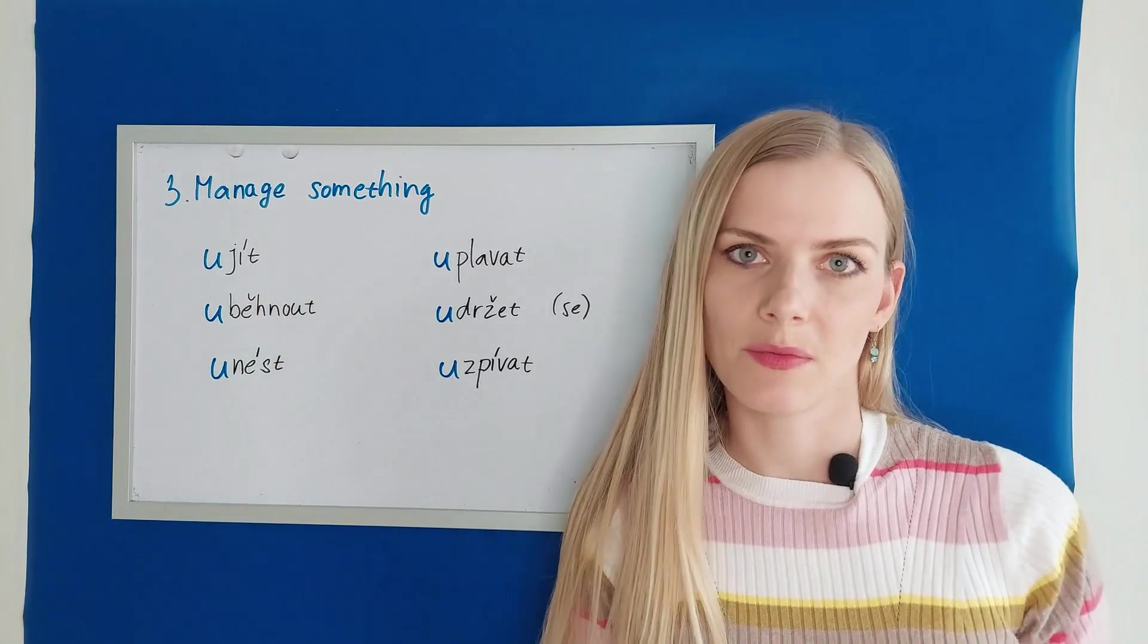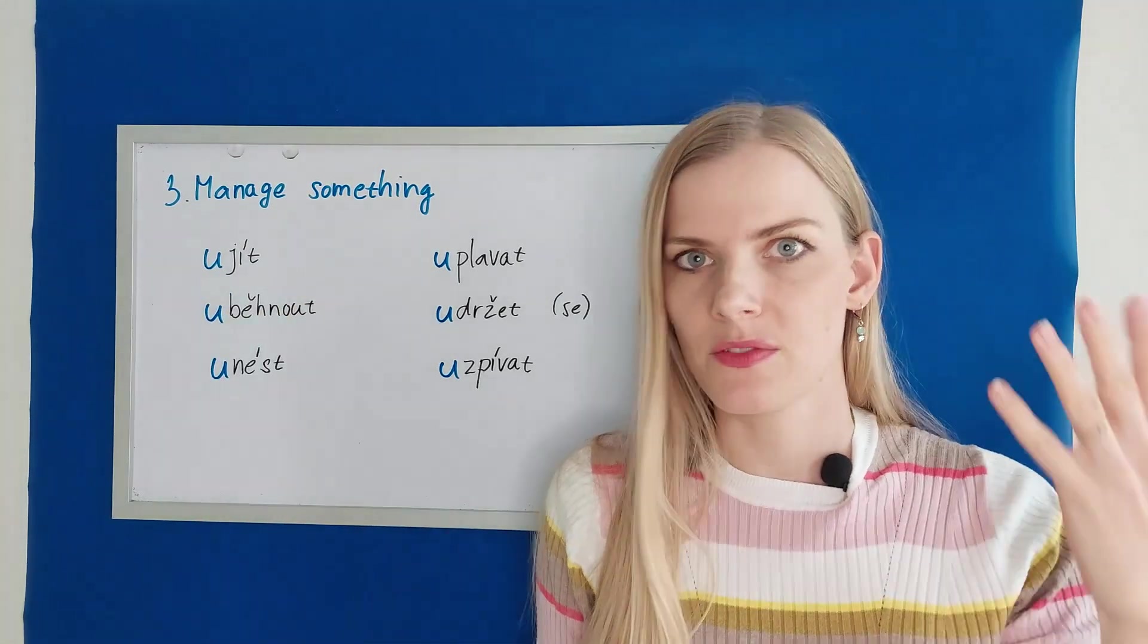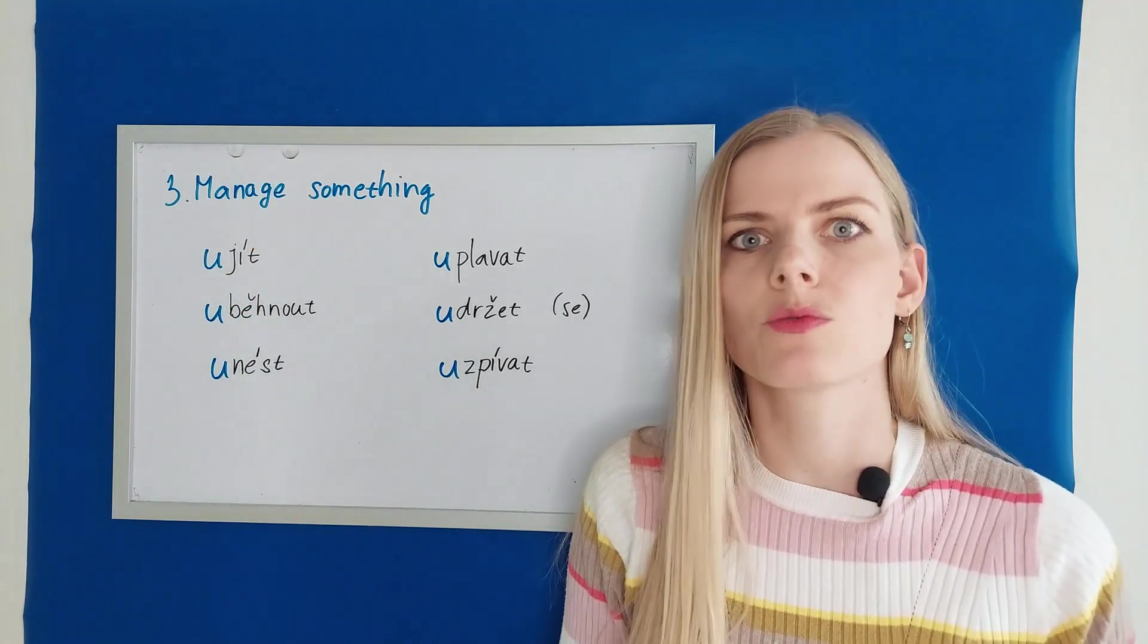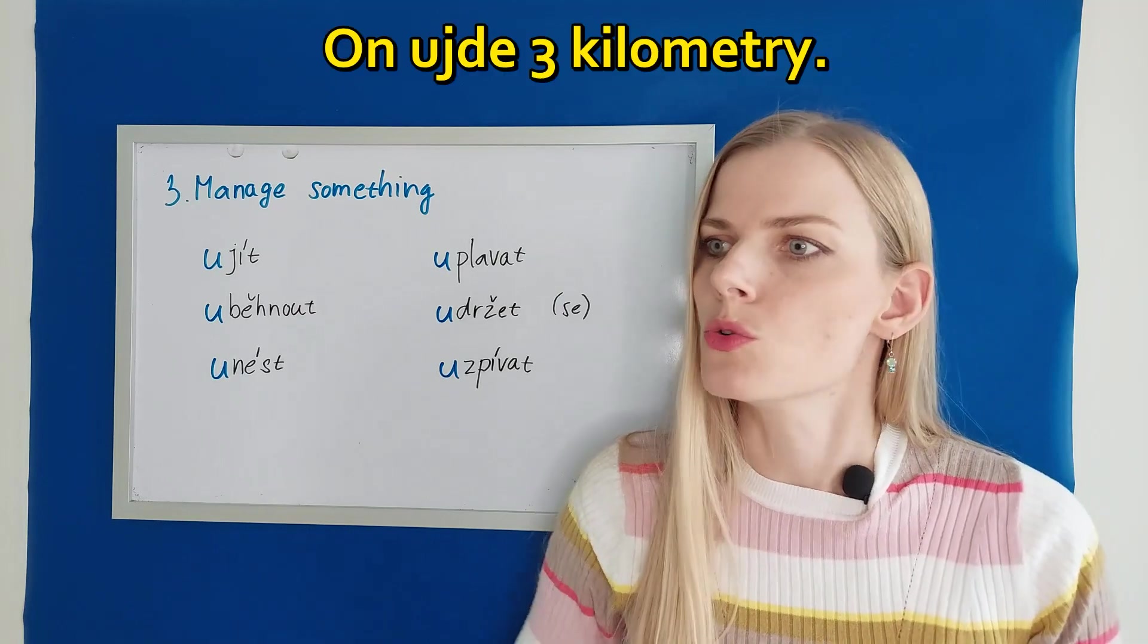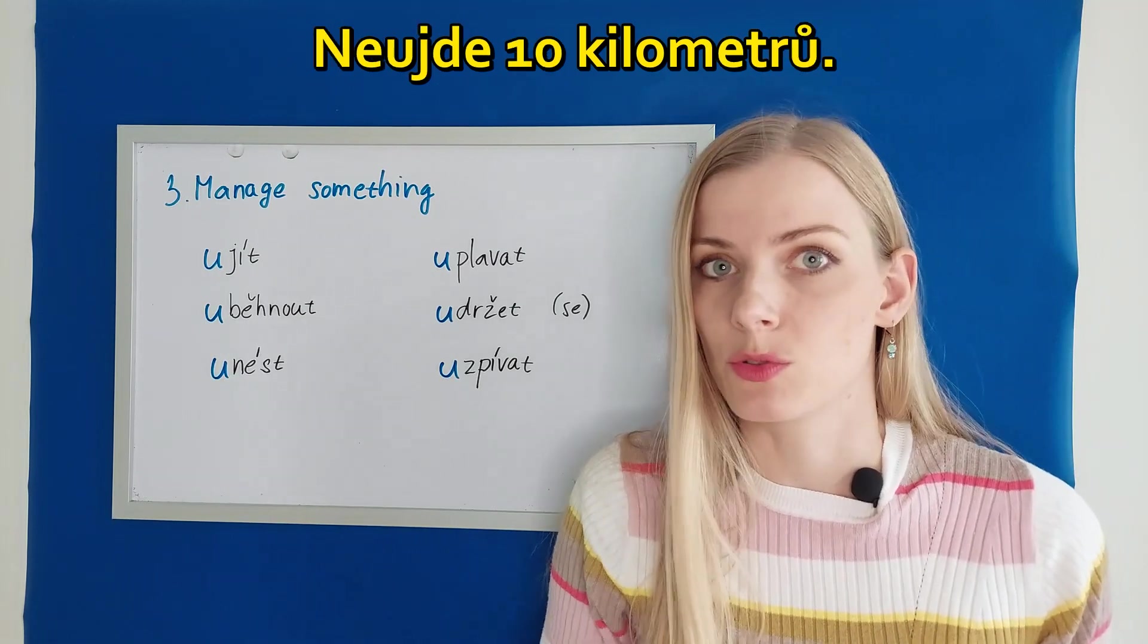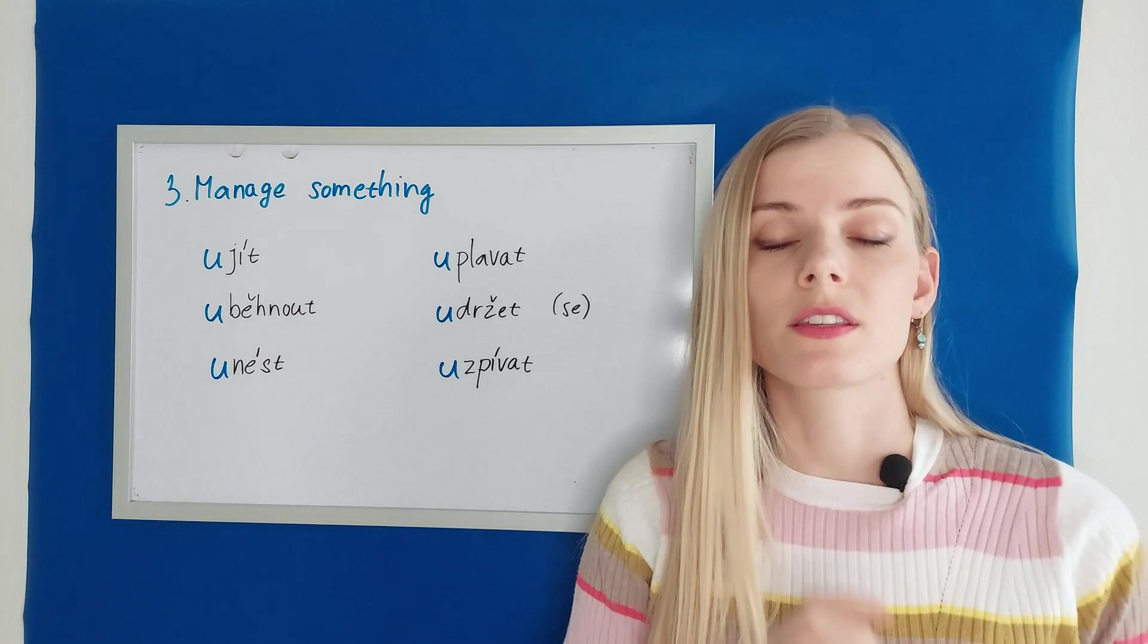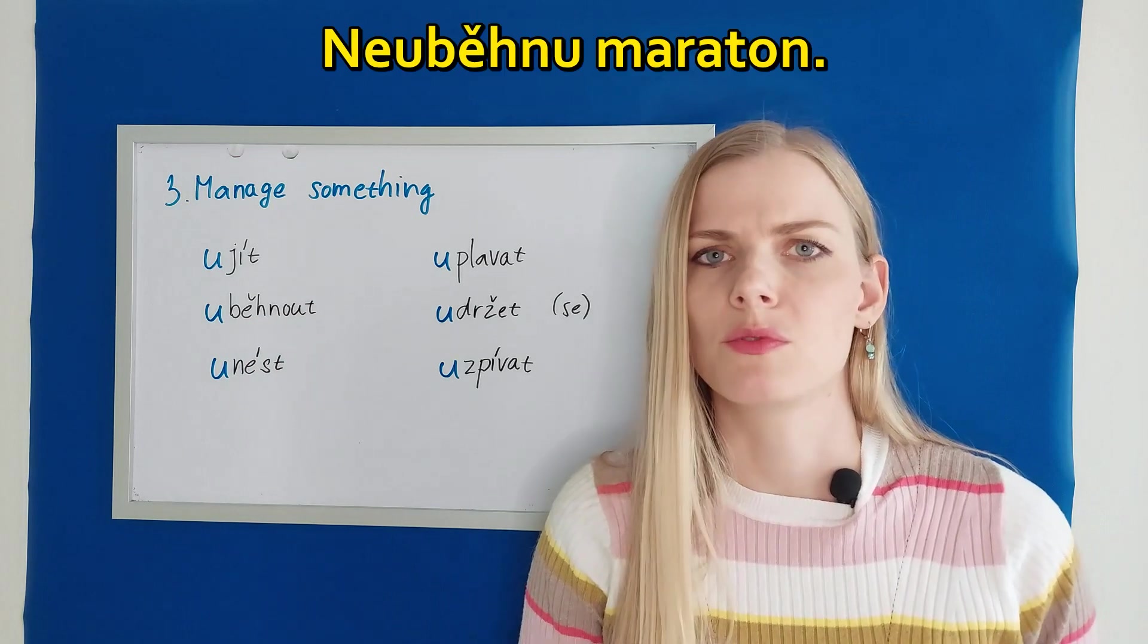The third category talks about something that we can manage. For example, the verb ujít. To be able to walk something. In the previous video, I talk about taking a walk and I say ušla jsem celkem 25 kilometrů. I walked a total of 25 kilometres. I managed to walk. This actually has two meanings. One is that I am able to walk it. I could say that a three-year-old child can walk three kilometres. On ujde tři kilometry. Neujde deset kilometrů. He won't be able to walk ten. And I can also use it when I just state the number. How much I walked. Uběhnout is exactly the same thing with running. To be able to run. I could say neuběhnu maraton. I won't be able to run a marathon.